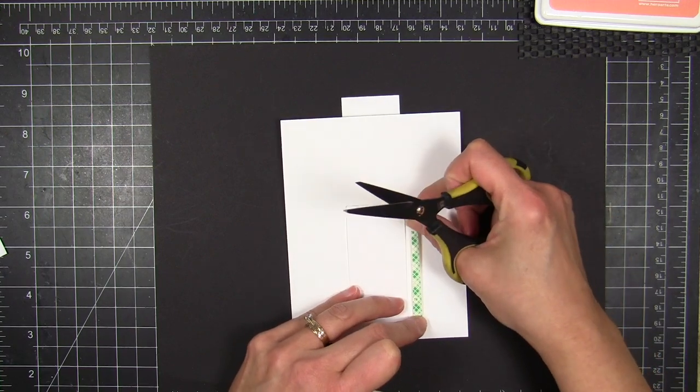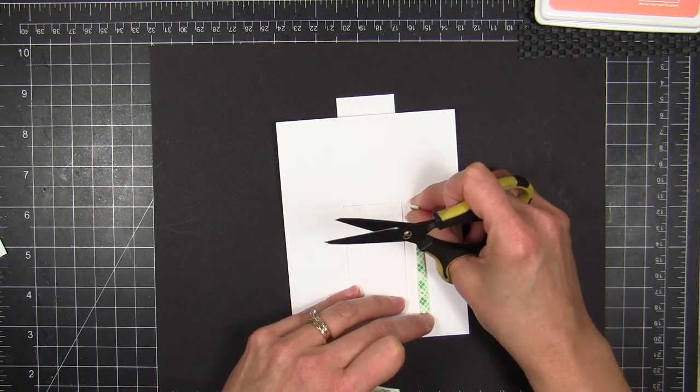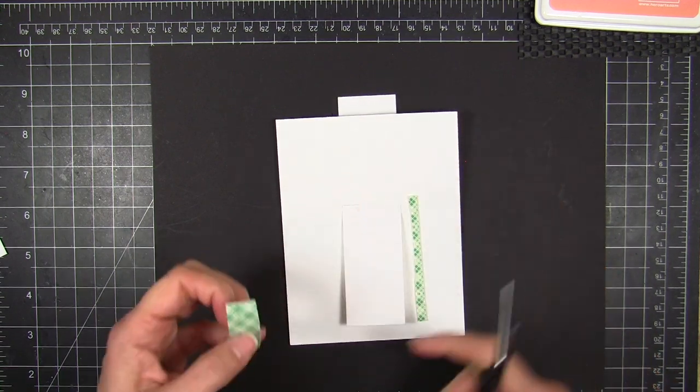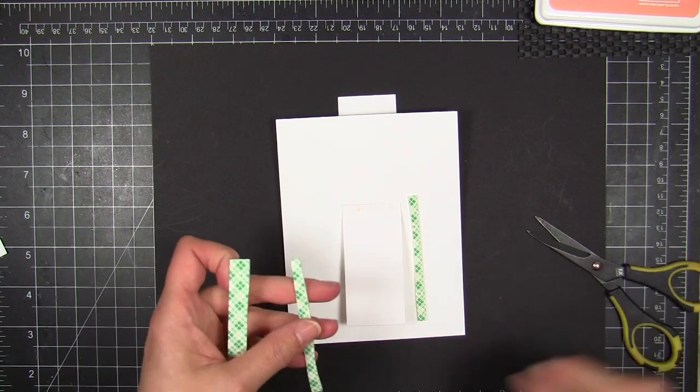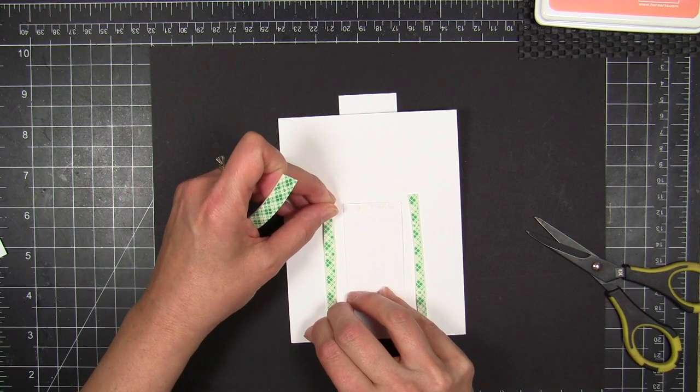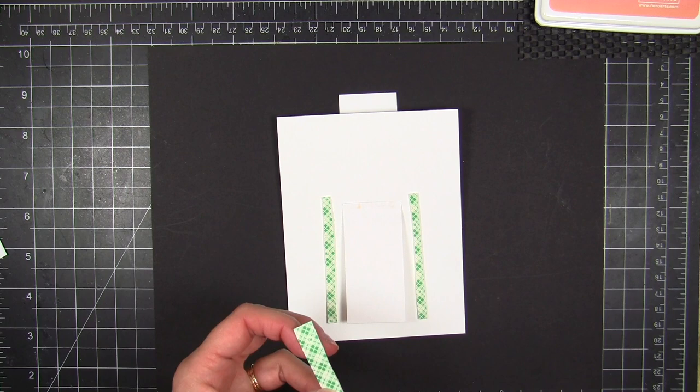I'm going to take some foam tape here and create a channel. This is a slider channel and I'm just cutting the strips of foam tape thin enough and mounting them just enough outside the lines of that strip so that I have some clearance there. And you'll see why as I continue to mount these strips.